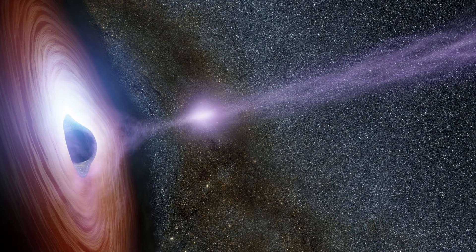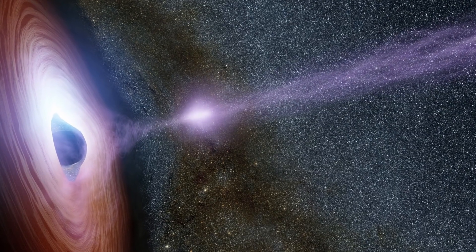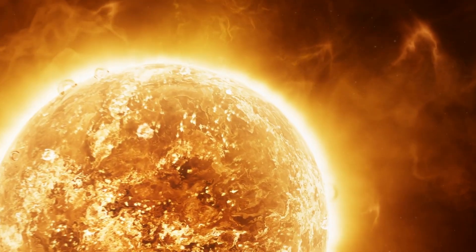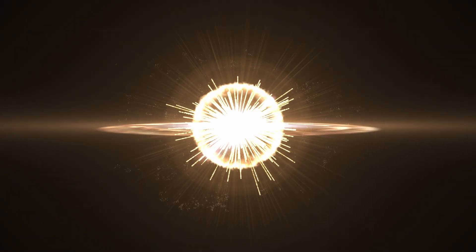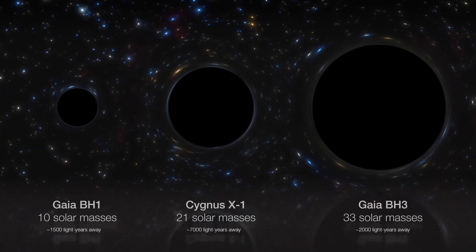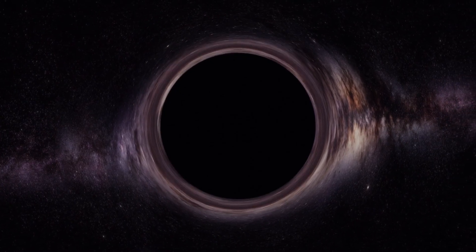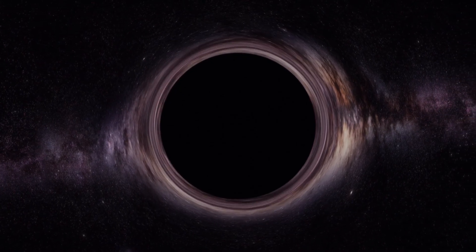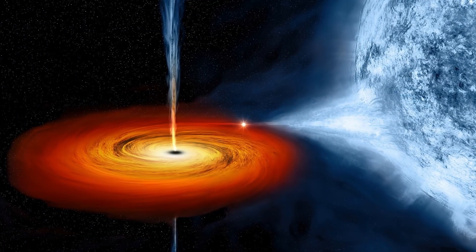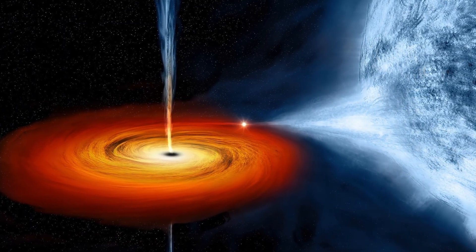Not all black holes are the same. There are three different types that we know of. First, stellar black holes are formed when massive stars collapse in a supernova explosion. They typically weigh between 3 and 100 times the mass of our sun. These are the most common black holes found in the universe. Many are part of binary systems, pulling in matter from a companion star and emitting powerful X-rays.